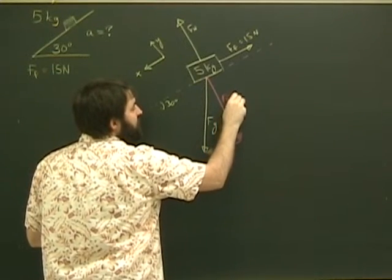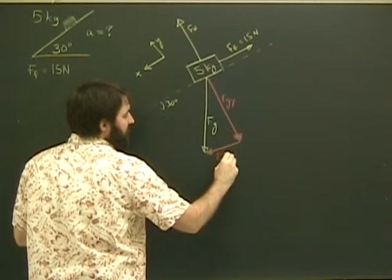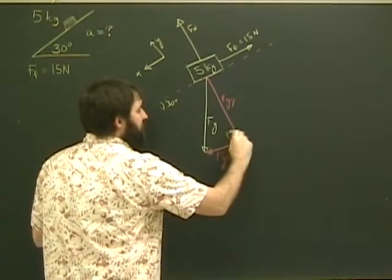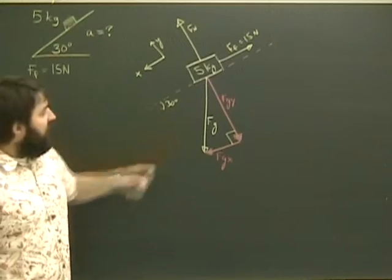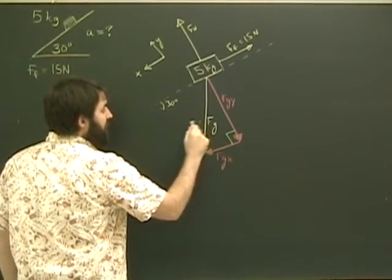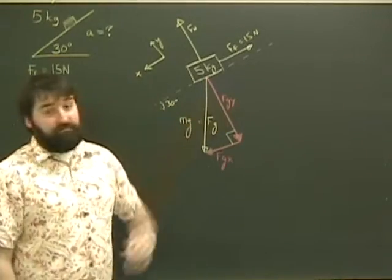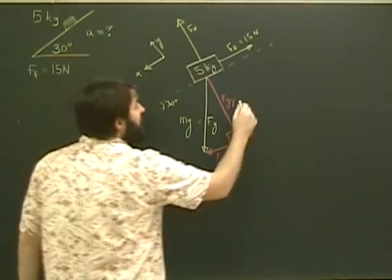I'll call this Fgy, and I'll call this Fgx. Now this angle between them is 90 degrees. Fg is equal to mg. So what is Fgy? Well let's break it into its component right now. Let's just get it written down.